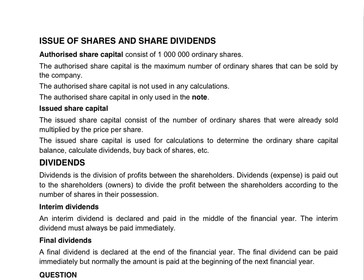Dividends is the way that a company divides the profits to the shareholders. Remember the shareholders are the owners of the business. So instead of having a sole trader or a partnership, in a company they have shareholders, and depending on the size of the company they can have millions of shareholders. The purpose of a business is to make a profit so that the owners can share in the profits, and this profit is divided between them according to dividends.